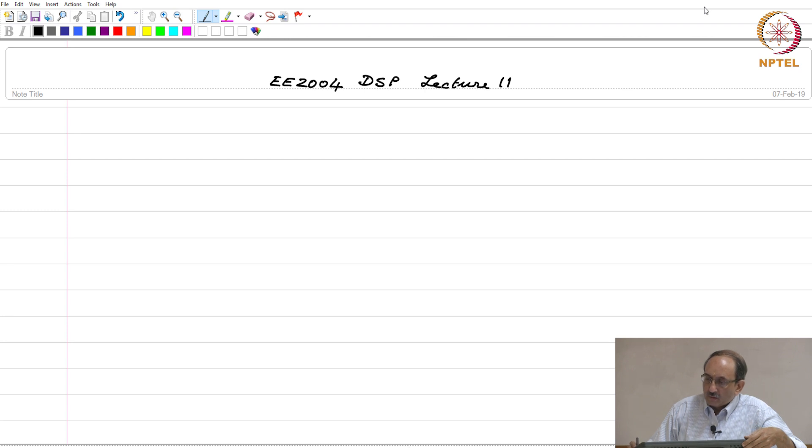The example that we had looked at towards the end of last class was this: we had h of n to be 1 over n for n between 0 to cap N minus 1.